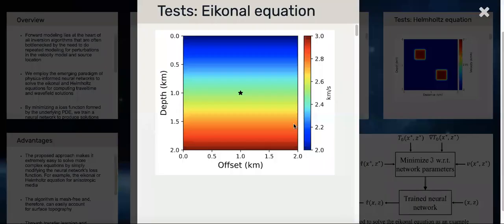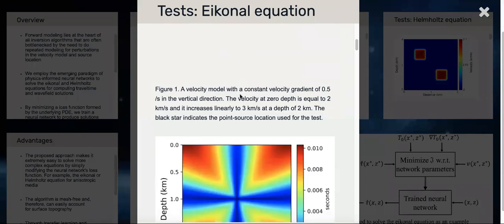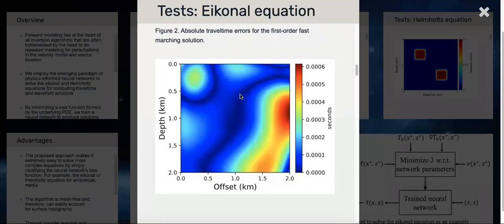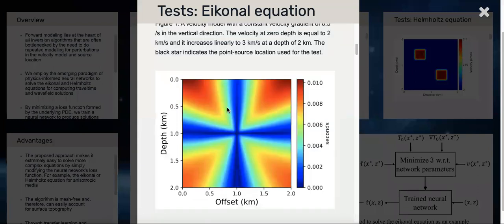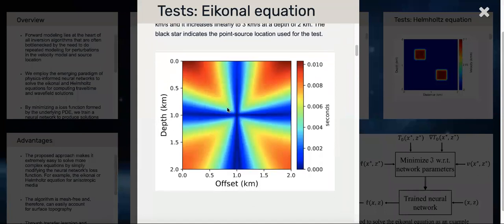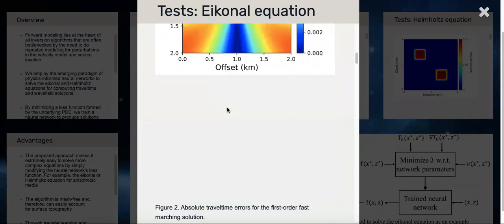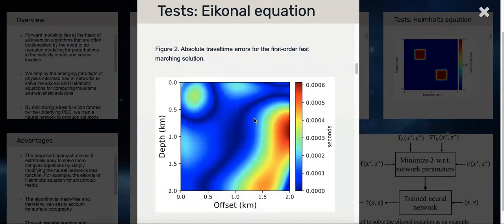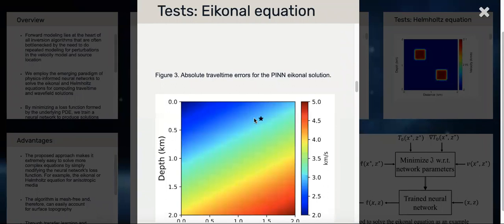A few test results. Here we have a v(z) velocity model with a source in the center. What we compare our solution against is the fast marching solution. Here is the solution with PINNs. What you see here are absolute travel time errors, which go up to 10 milliseconds in the case of fast marching method, whereas the errors are considerably less and randomly distributed for the physics-informed neural network. The approach works.